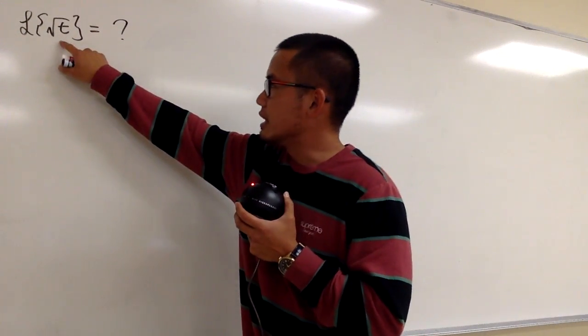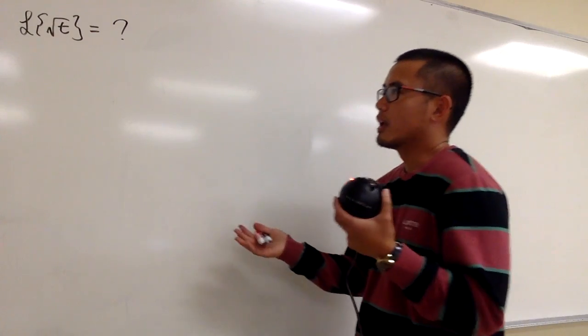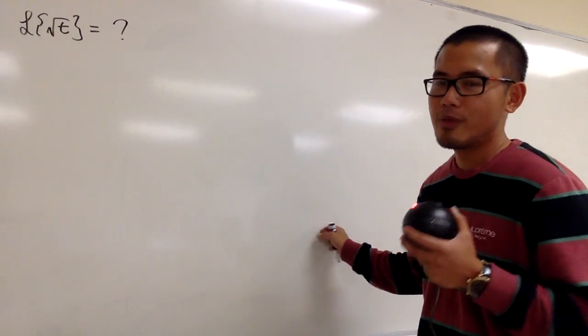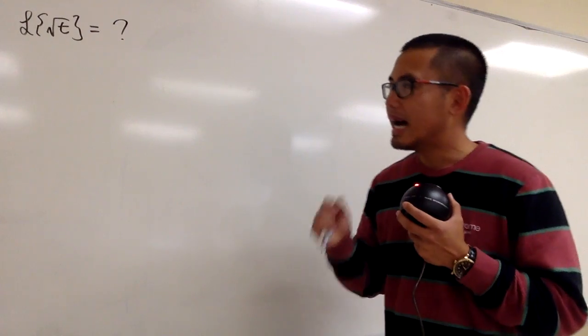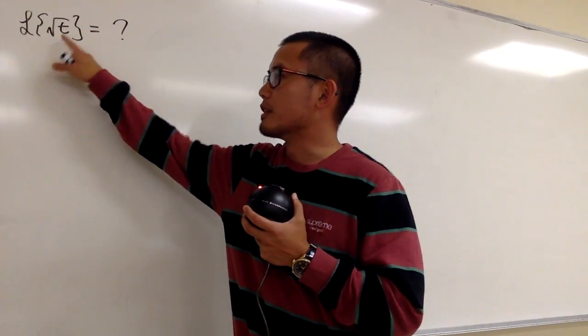Here, this is t to the 1 half power. It's a fraction, right? So we cannot use that formula, and in that case, what can we do right here? Well, let's go back to the fundamental. Ask yourself, have we done anything that's similar to the Laplace transform of the square root of t?